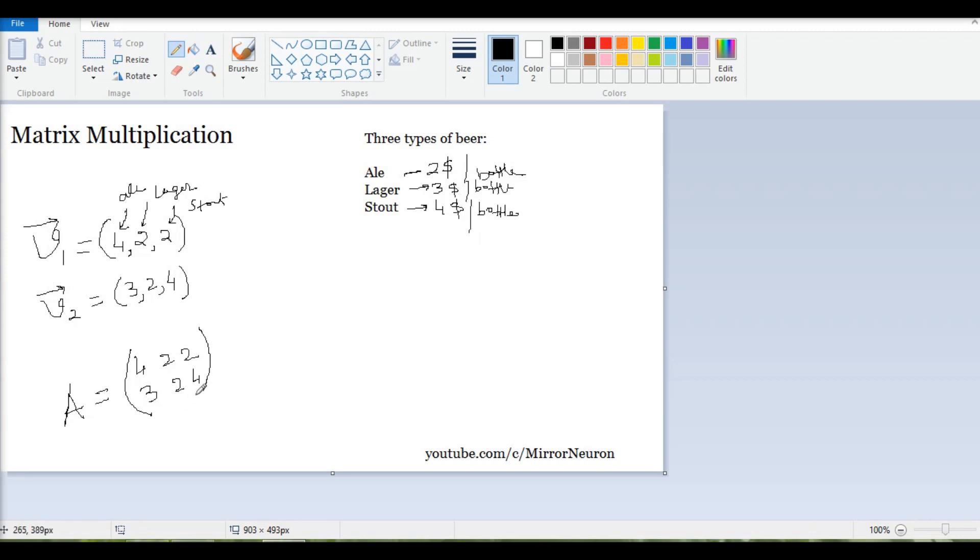In this case, we have a simple rule to keep in mind: if this is a 2 by 3 matrix, we can only multiply with something that has a dimension which starts with 3. These inner numbers should match. So if it's an m by n matrix, then it should be n by some value. It could be 1, 2, 3, and so on, but the inner numbers should match.